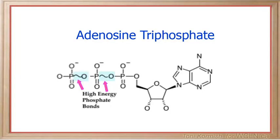These symbols represent high-energy bonds between the phosphate groups. Whenever you see three phosphate groups with these squiggly lines between them, you know it is referring to a molecule called adenosine triphosphate.